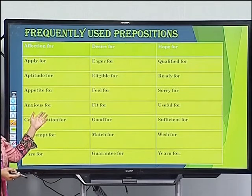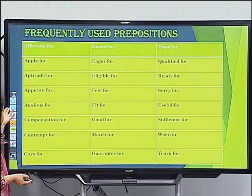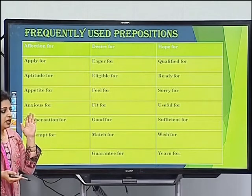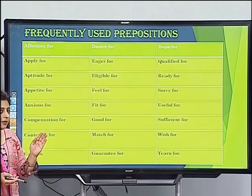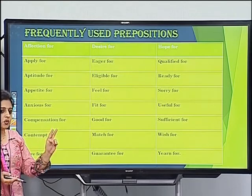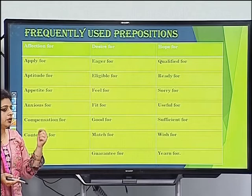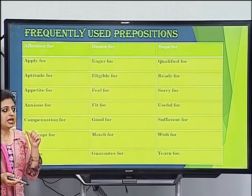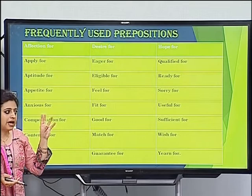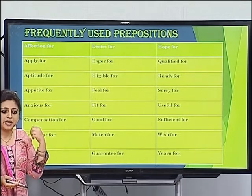'Apply for' — I applied for the job. 'Aptitude for' — when you have the talent or capacity for something. For example, he has aptitude for maths — meaning he has the talent and capacity for reasoning and mathematics.